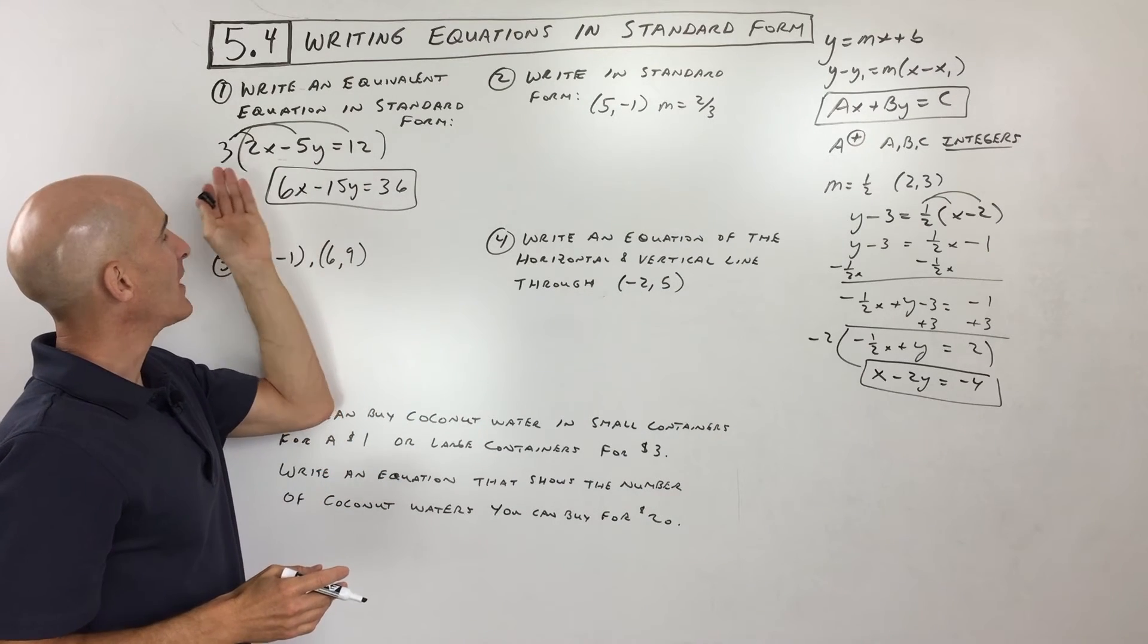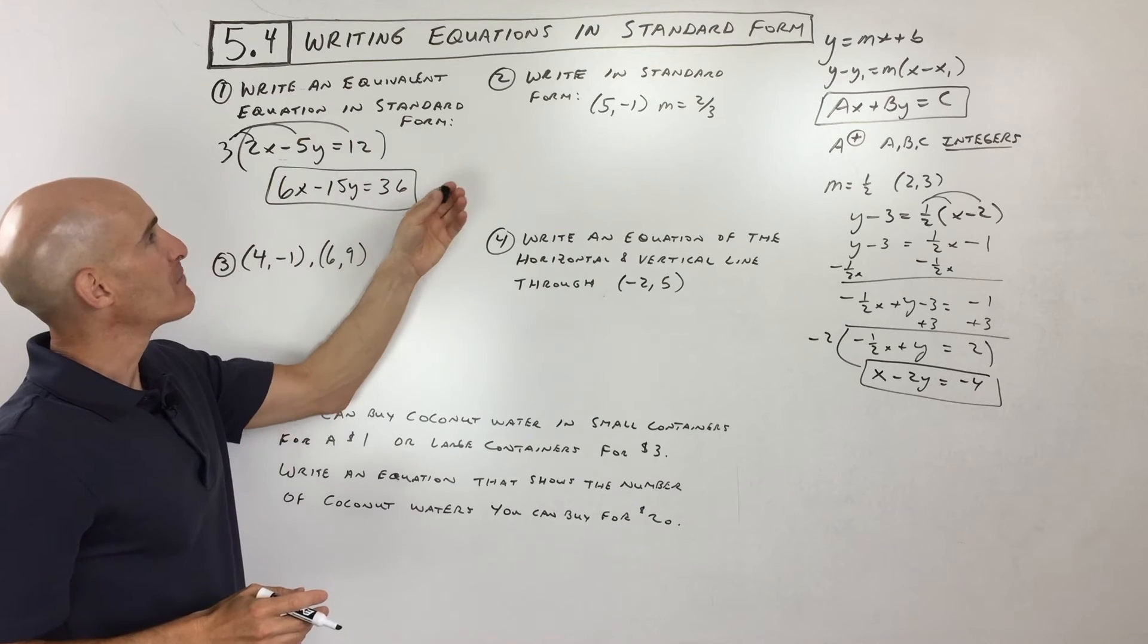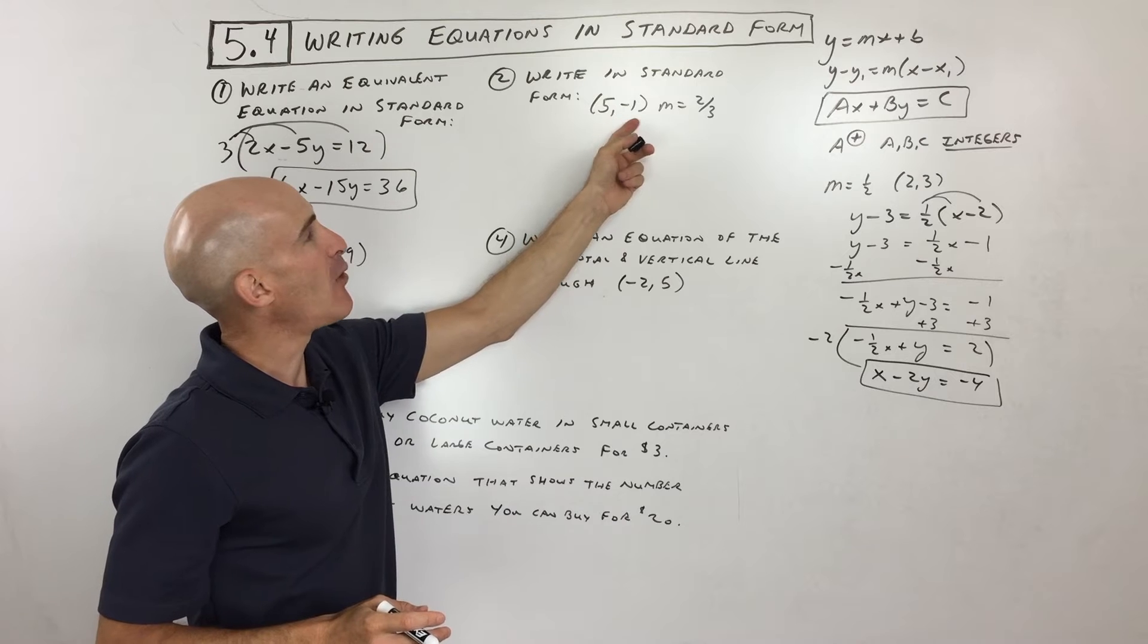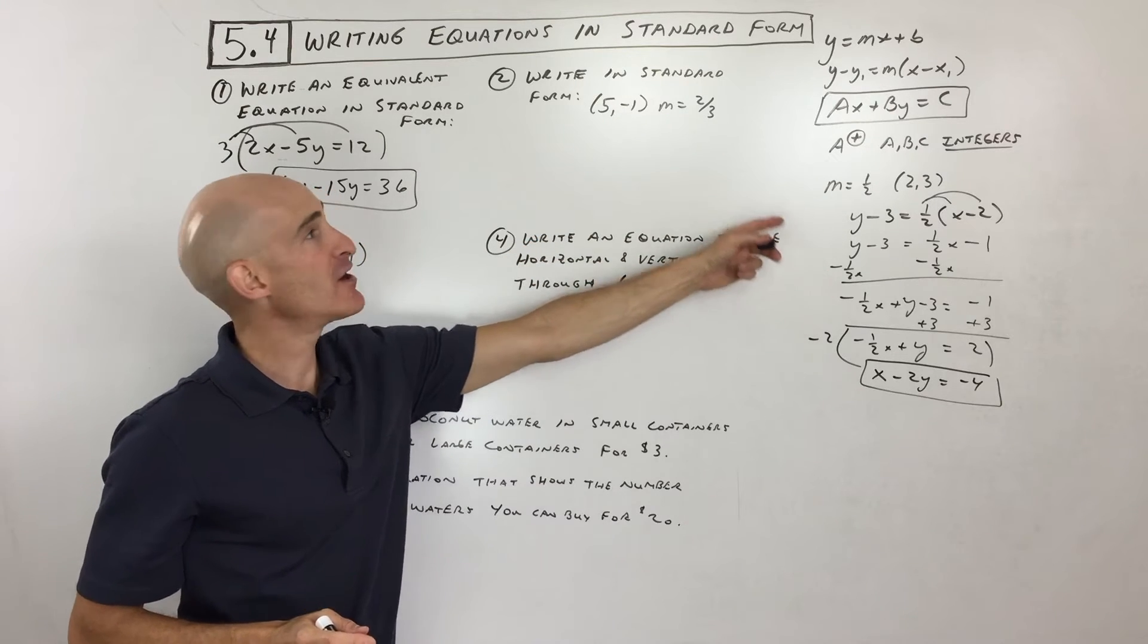You can multiply by 2, by 10, whatever you want. You'll get the same equivalent form. So write it in standard form. So now this one, they're giving us a point and a slope, very similar to what we did over here.